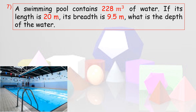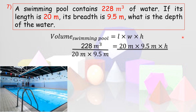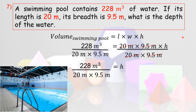A swimming pool contains 228 cubic meters of water. Its length is 20 meters and its breadth is 9.5 meters. Find the depth. Note that breadth means width and depth means height. Using Volume = length times width times height: 228 = 20 times 9.5 times h. Dividing both sides by the product of 20 and 9.5, h equals 228 divided by 190, which equals 1.2 meters.